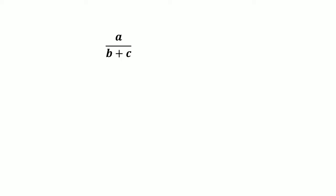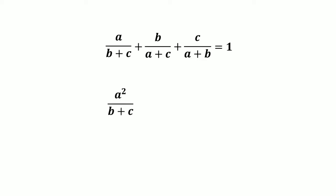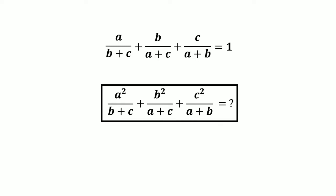Hi everybody, today I have another question for you from algebra. The question is: if a divided by the quantity (b plus c), plus b divided by the quantity (a plus c), plus c divided by the quantity (a plus b) equals 1, then what is the value of a squared divided by (b plus c), plus b squared divided by (a plus c), plus c squared divided by (a plus b)? Please give it a try and keep watching for the solution.